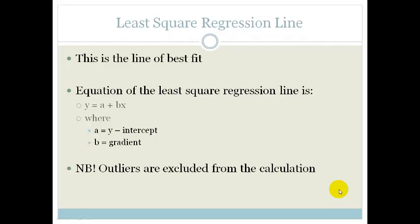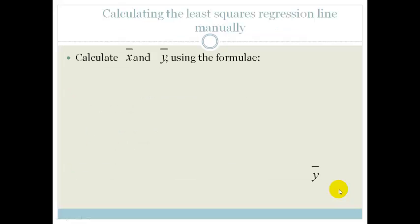Now remember, and it's very important, that the outliers are excluded from the calculation. So we calculate the average of x and the average of y using the formula that the average of x is the sum of all the x divided by n. The average of y is the sum of all y divided by n.